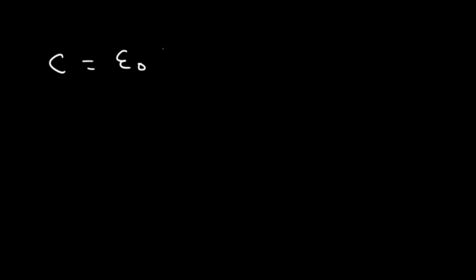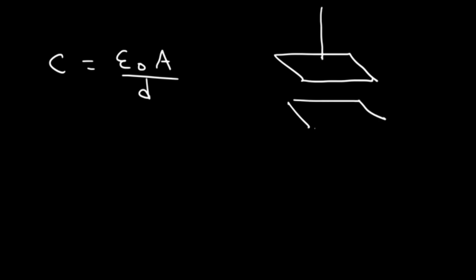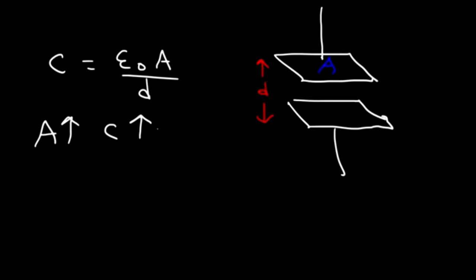Now there's another equation you need to know: C is equal to epsilon sub-naught times A divided by D. We said that the capacitance depends on the construction of the capacitor. Here we have two metal plates separated by a distance D, and each plate has an area A. For a rectangle, area is just length times width. The capacitance depends on the area — if you increase the area, the capacitance will increase, because you can store more charge over a larger surface.